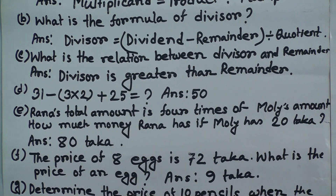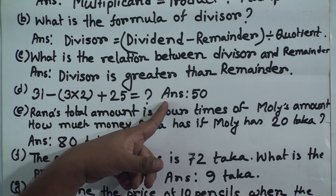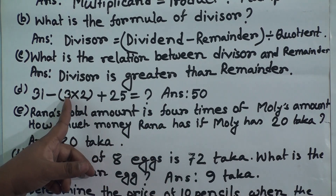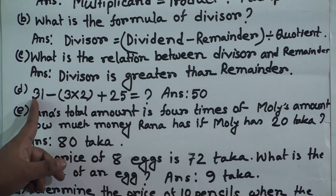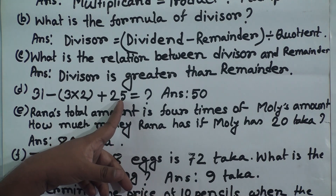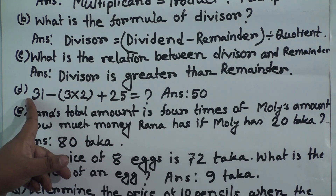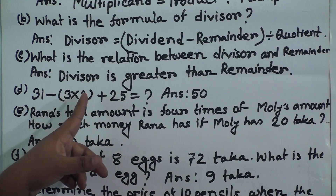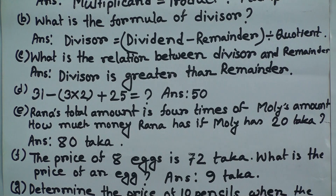You can also write it another way: remainder is always smaller than divisor. (d) 31 − 3 × 2 + 25 equals what? First we do multiplication: 3 twos are 6. The 6 carries a minus sign and 31 and 25 carry plus signs. We do addition first: 31 + 25 = 56. Then subtract 6 from 56 and we get 50. So 50 is the required answer.